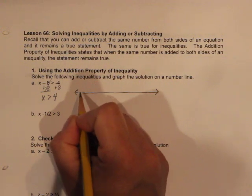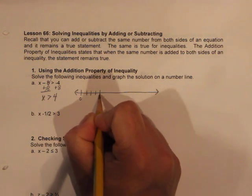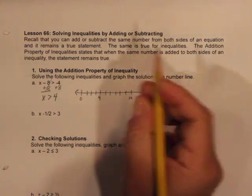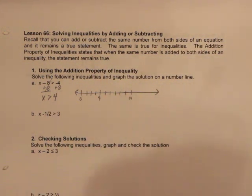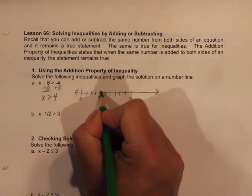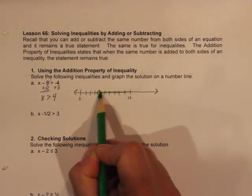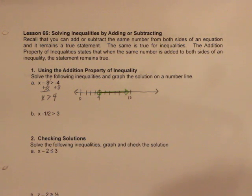Now I'll draw a number line. x is greater than 4, so I'll start at zero: 1, 2, 3, 4, 5, 6, 7, 8, 9, 10. Since we have a greater than sign that does not include equal, we use an open dot at 4. x is greater than 4, so the graph includes all values higher than 4 — arrow pointing right.